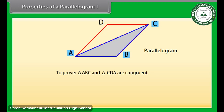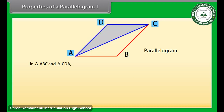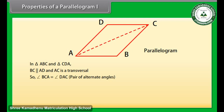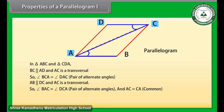We need to prove that triangle ABC and triangle CDA are congruent. In triangle ABC and triangle CDA, BC is parallel to AD and AC is a transversal, so angle BCA is equal to angle DAC — these are a pair of alternate angles. Also AB is parallel to DC and AC is a transversal, so angle BAC is equal to angle DCA — these are a pair of alternate angles. And AC is equal to CA because this is common to both triangles.